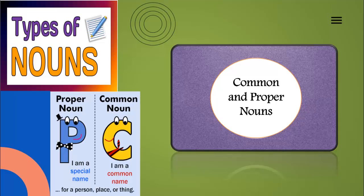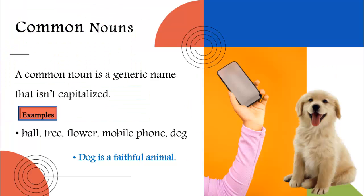What are all these items? These are common nouns, and we use common nouns all the time, even if we don't realize it. A common noun is a generic name that isn't capitalized. Here are some examples: ball, tree, flower, mobile phone, dog, etc. — these are all examples of common nouns.